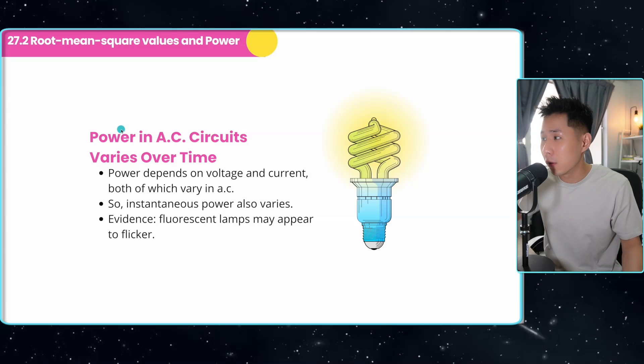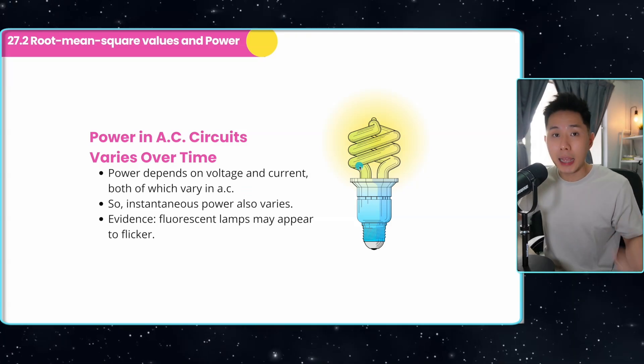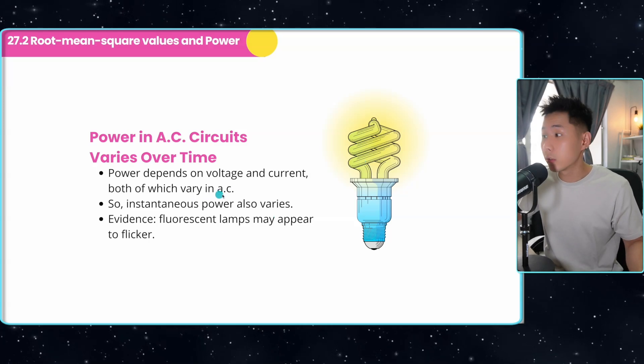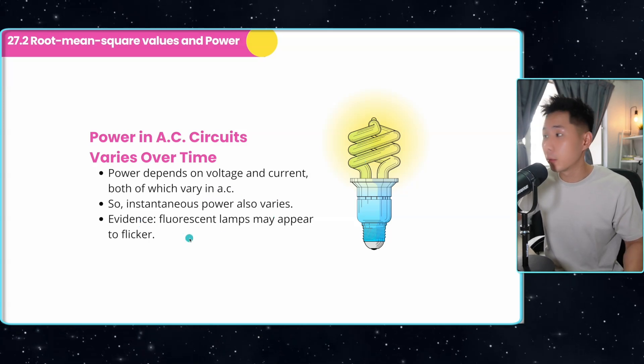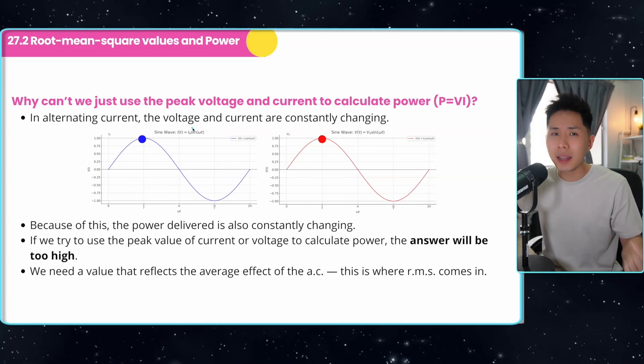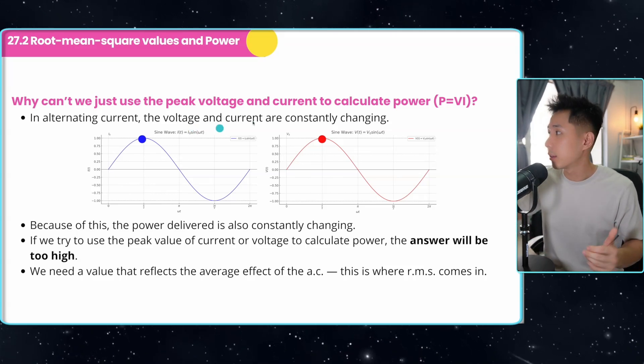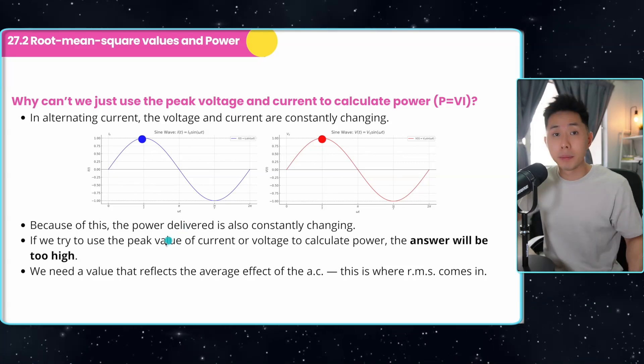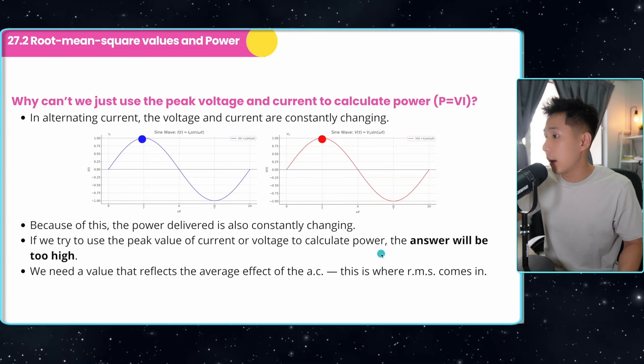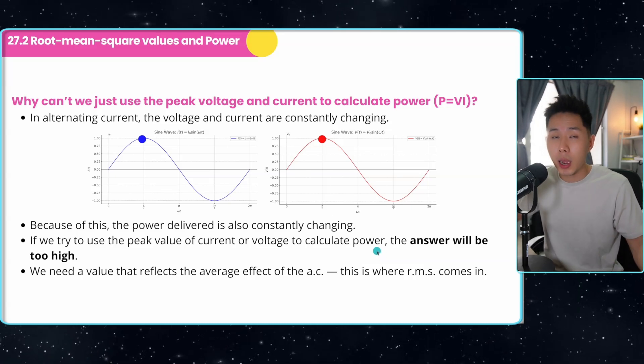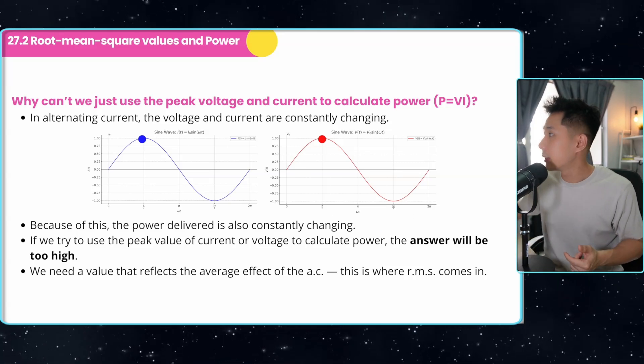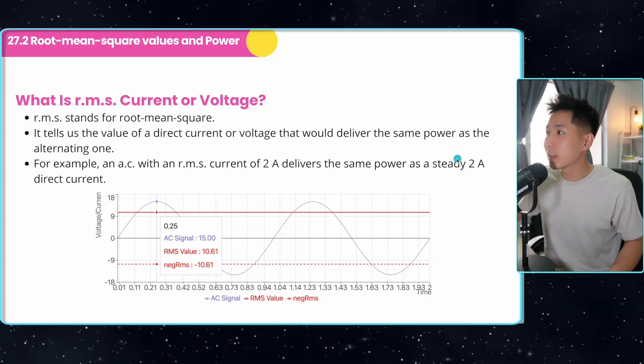There are also instantaneous power. For example, because if an electrical component is dependent on alternating current, that power will also change. So some evidence will be a fluorescent lamp may appear to flicker. And because of this, we can't just use the instantaneous current and voltage to calculate the power of a device. Because if we were to try to use the peak value of current and voltage to calculate power, the answer would likely be too high.